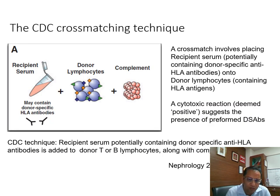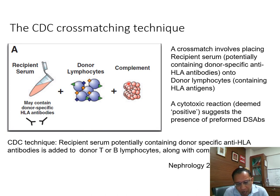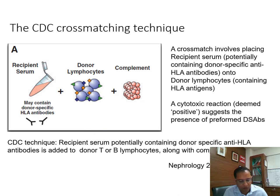The technique for CDC crossmatch is straightforward: take donor lymphocytes (which contain the HLA antigen) and patient serum (which contains the antibodies). Add complement, then add a dye. If there is an antigen-antibody reaction, complement attaches and causes the membrane attack complex to form, lysing the cells. Once lysis happens, the dye enters the cells. Count how many cells are dye-positive and express this as a percentage — that is how you interpret the CDC crossmatch.